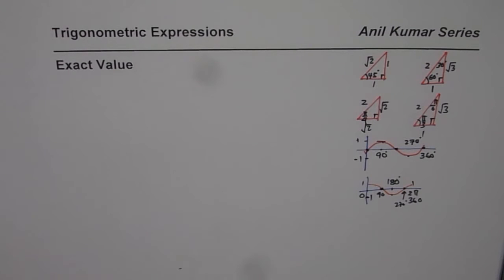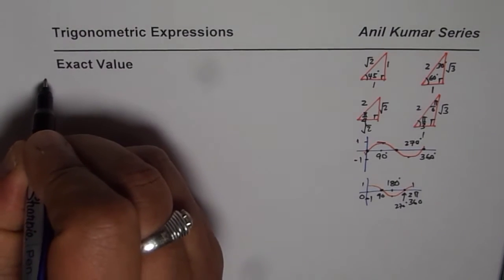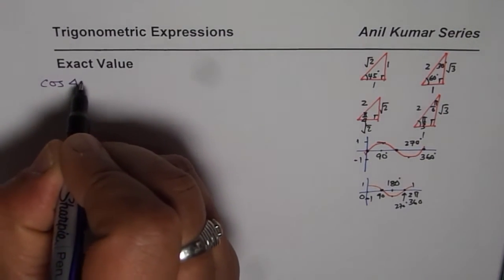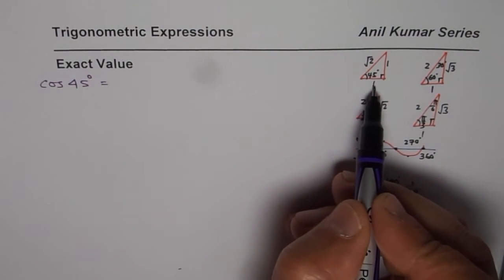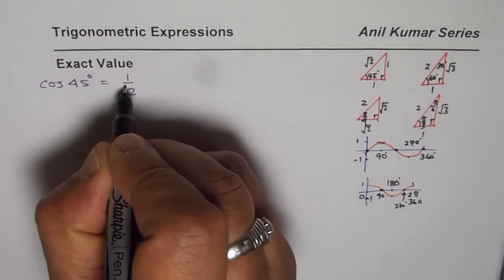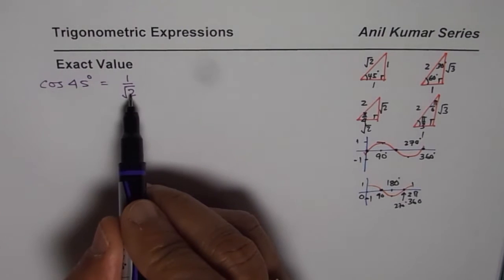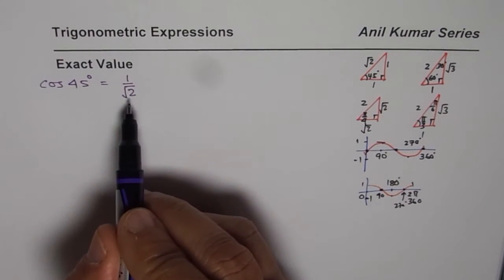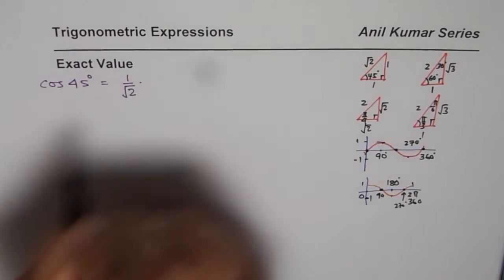Now, one caution is, if I start with a simple value, let's say, what is cos of 45 degrees, then you will go to this triangle and say, well, cos of 45 degrees is 1 over square root 2. So, that is your exact value for cos of 45 degrees. But remember one thing, that when we are talking about exact values, you should not be writing square root or any radical in the denominator.